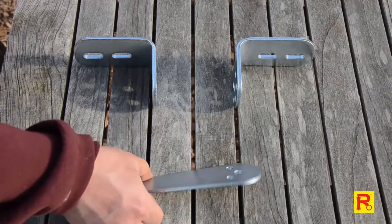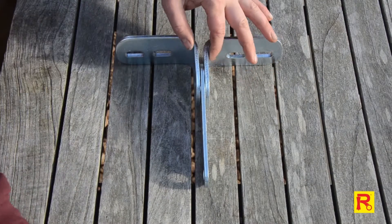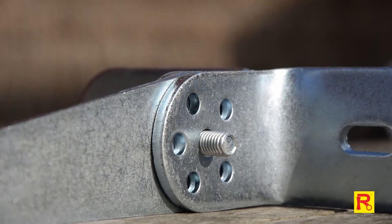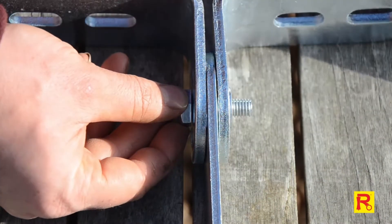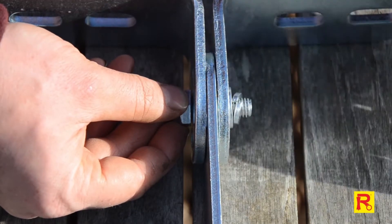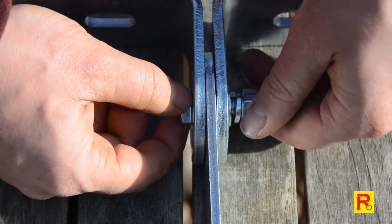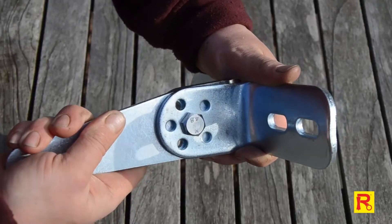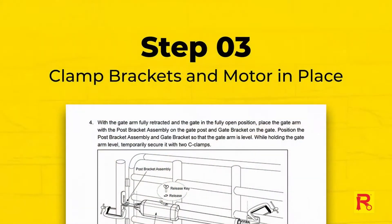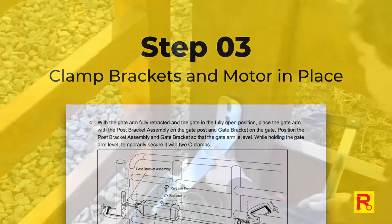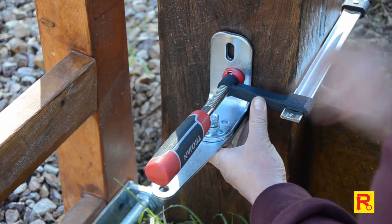First, assemble the two post pivot brackets using the supplied M10 bolts, nuts and washers. Hand tighten so that the pivot plate can swivel freely. With your gate in the fully open position, clamp the post pivot bracket to your fence post.